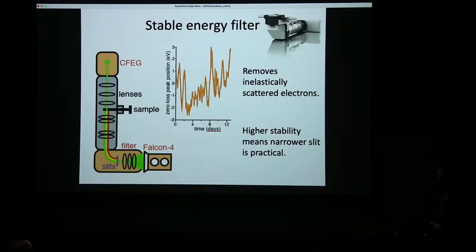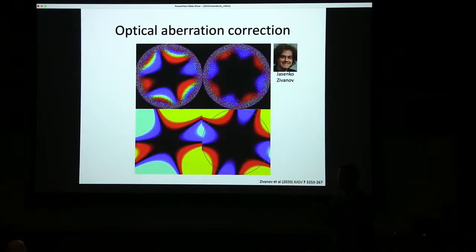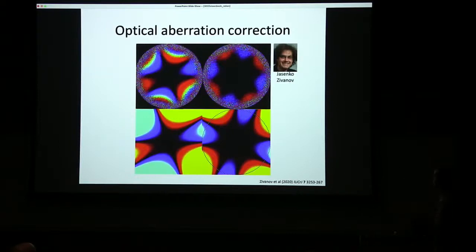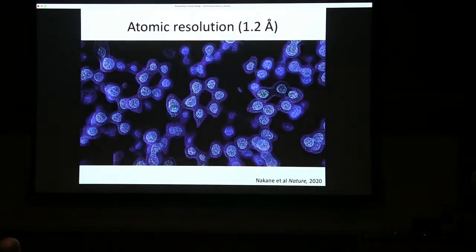Together with that, a filter that filters away inelastically scattered electrons — much more stable than filters available until then — over many days gives only a few eV movement of the slits. That means you can make a much narrower slit and do the filtering of inelastically scattered electrons better. All this combined with software — including an important optical aberration correction component written by Jasenko — because even very small errors in the alignment of the microscope can completely kill the signal when pushing towards the one-angstrom regime. There are effects that go to the square or the cube with spatial frequencies, so they become ever worse. Jasenko wrote software to detect asymmetric and symmetrical aberrations — resolution-dependent or position-dependent phase shifts of the Fourier components in the images — measure them and re-shift them back post-hoc to correct the optical aberrations present in the data during image processing.